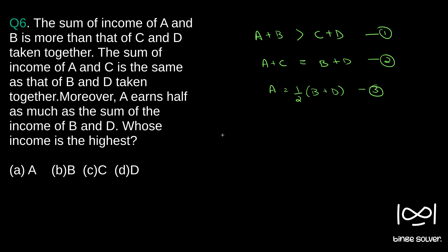If you see using 2 and 3, we have if you substitute B plus D is equal to 2A in equation 2, we have A plus C equal to 2A or A equal to C. So, we got A equal to C.